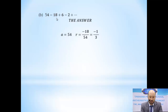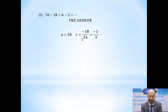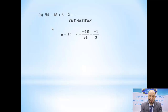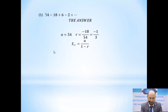So a equals 54 and r equals the quotient of any two consecutive terms. We divide the right term by the left term: if you divide -18 by 54 you get -1/3. If you divide 6 by -18 you also get -1/3. The right divided by the left — that is the correct direction. So r equals -1/3.